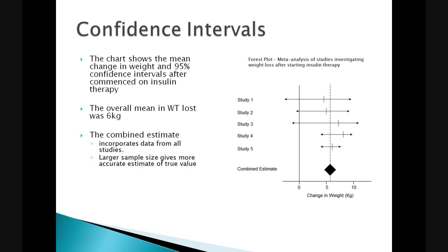The next slide shows a typical forest plot that is demonstrated in many meta-analysis studies. The chart shows a number of different studies which have investigated the weight loss in patients after starting insulin therapy. The combined estimate shows an overall mean weight loss of approximately 6kg, and the diamond of the combined estimate also shows a much narrower confidence interval compared with the individual studies themselves.